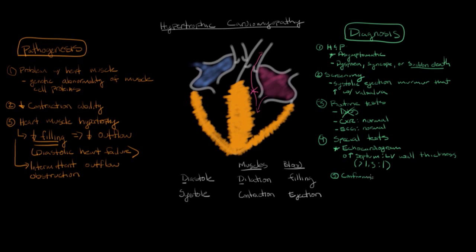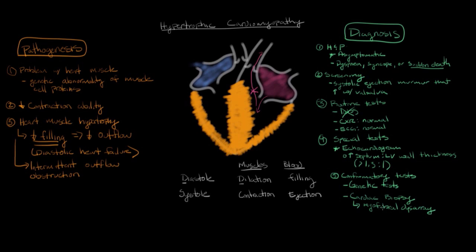Specifically, this ratio will be greater than 1.3 to 1. Once the echocardiogram is positive, the last step is confirmatory tests. The first type is genetic testing, since hypertrophic cardiomyopathy is caused by genetic abnormalities of muscle cell proteins detectable in blood tests. The other confirmatory test is a cardiac muscle biopsy, which is not necessary for diagnosis but shows a characteristic finding known as myofibril disarray — where muscle fibers, normally lined up linearly, are instead oriented in all sorts of different directions — and this disarray is what causes the original decreased ability of the muscle to contract.